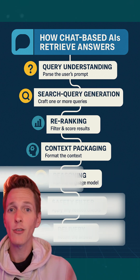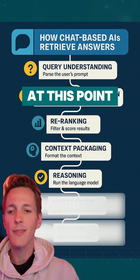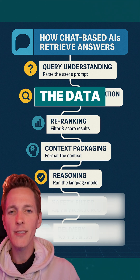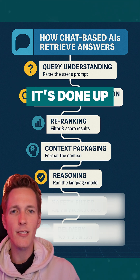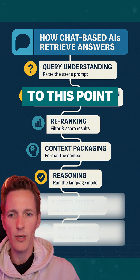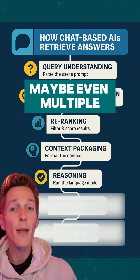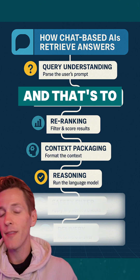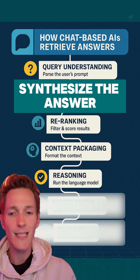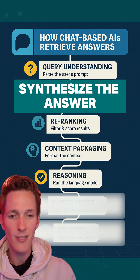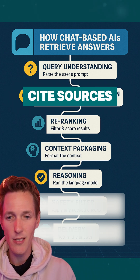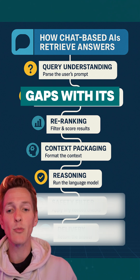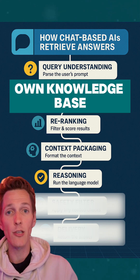Which is step five: reasoning. At this point it takes that prompt — all the data and everything it's done up to this point — and runs it through the LLM, maybe even multiple times. That's to read the context, synthesize the answer, cite sources, and potentially even fill in any gaps with its own knowledge base.